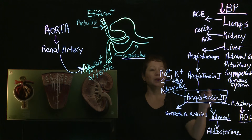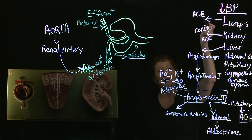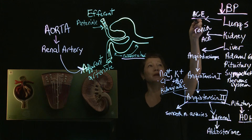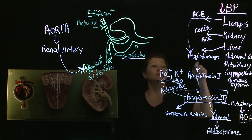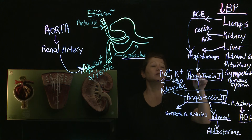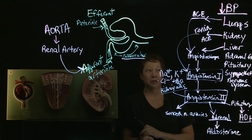Those are the big key points to know and remember. The lungs secrete angiotensin converting enzyme, which acts on angiotensinogen to produce angiotensin I. Renin acts on angiotensin I to produce angiotensin II. This is all happening in the bloodstream, in the plasma.